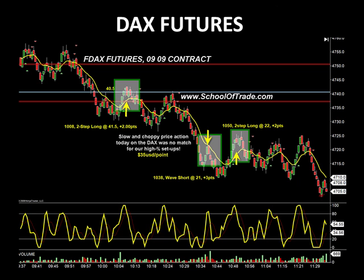Now let's talk about some of the trades we took this morning. The DAX market was pretty good to us today. The Russell market was pretty good to us today. We saw very sluggish price action, and the DAX and the Russell were no different. This is the FDAX futures contract trading the September 09. It didn't take us long to get out the gate this morning after the 9:30 open. Eight minutes past the hour — as you can see, this is a very sluggish, slow price action.